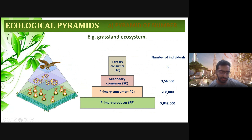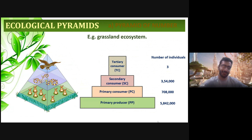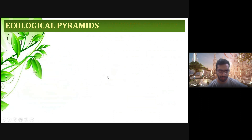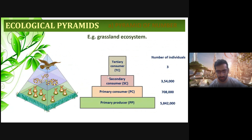The number of primary consumers is about seven lakh eight thousand. The secondary consumers — snakes — number about three lakh fifty-four thousand. The tertiary consumers are very few in number. They feed upon the secondary consumers, which feed upon the primary consumers, which in turn consume the primary producers.